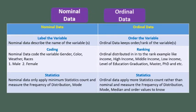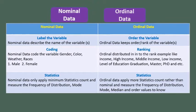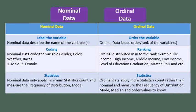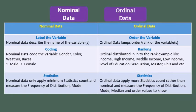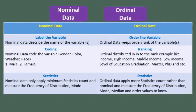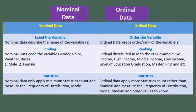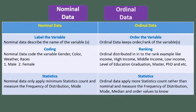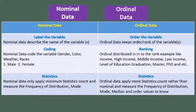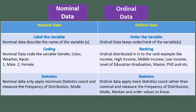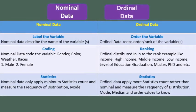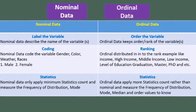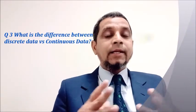Ordinal data distributes by rank. For example, income can be ranked as high income or low income, or level of education such as graduation, masters, or PhD. Statistics: nominal data only applies minimum statistics — counting and measuring the frequency of distribution and mode. Ordinal data applies more statistics than nominal data; it measures frequency of distribution, mode, median, and order values.